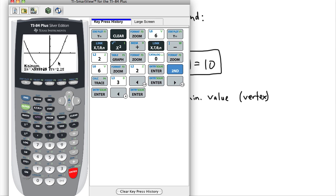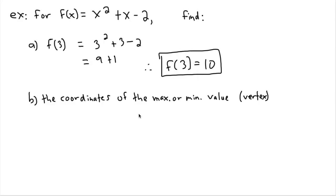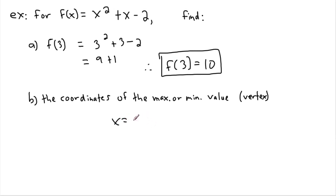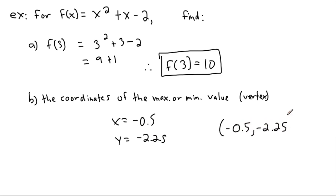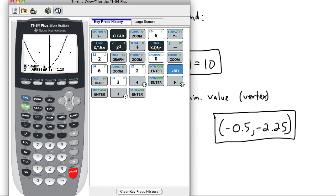It tells me the coordinates I need. This is pretty much x equals negative 0.5 and y equals negative 2.25. So those are the coordinates of my minimum. We normally write coordinates with the x value first, then a comma, then the y value: negative 0.5 comma negative 2.25. This is the actual coordinates of the minimum point on the graph.